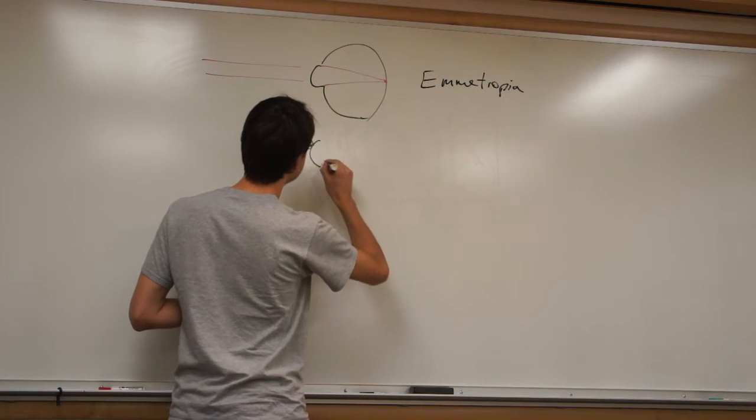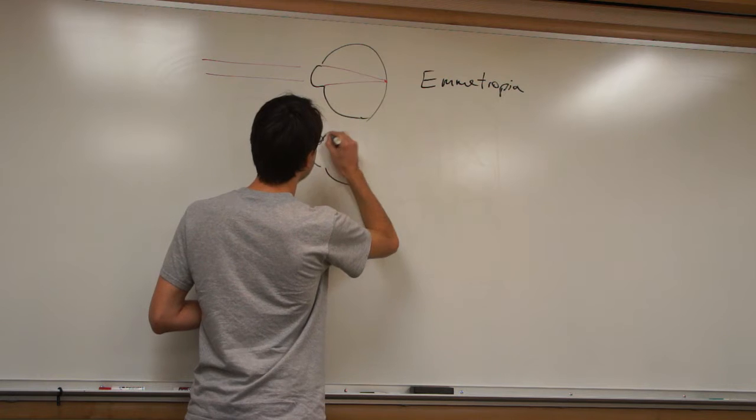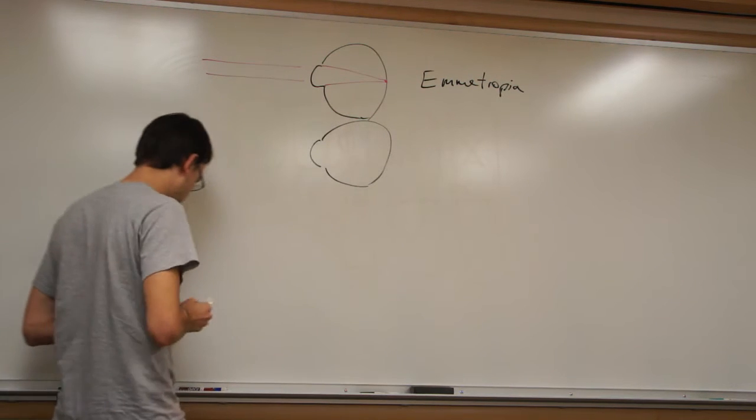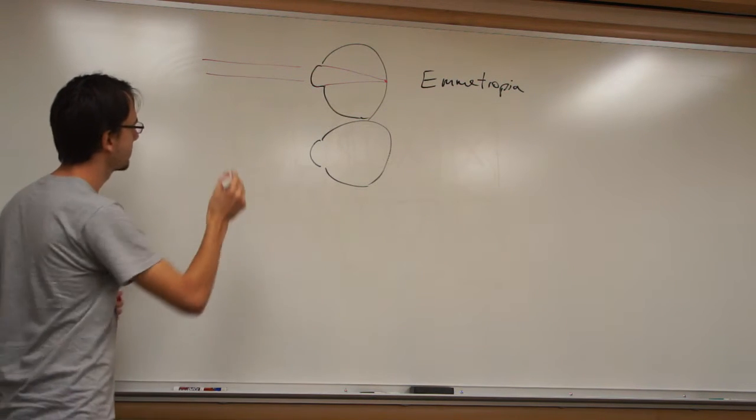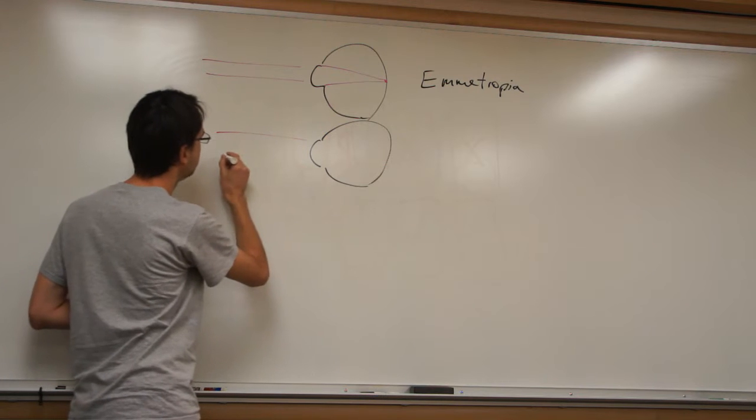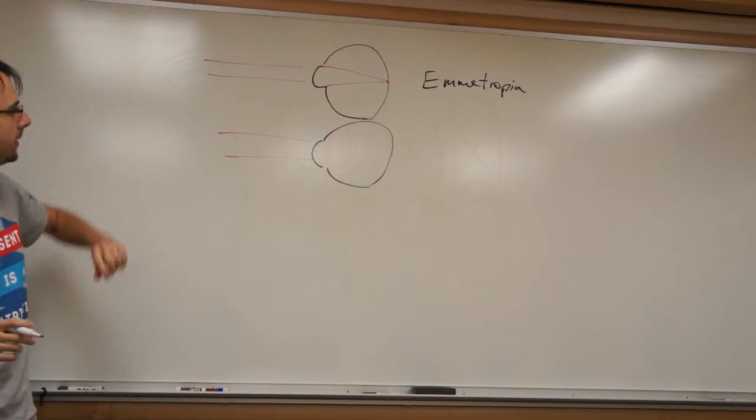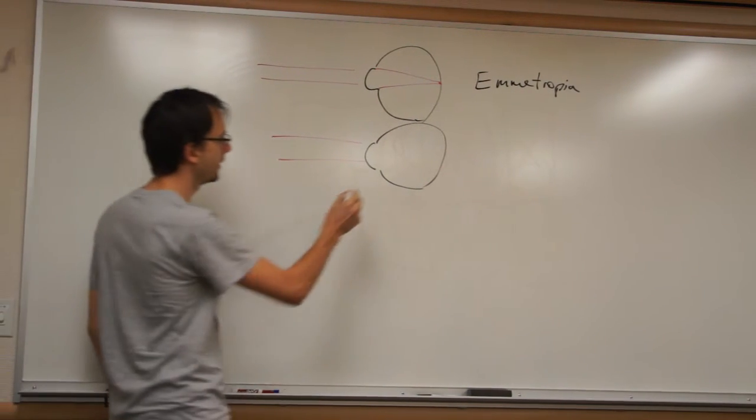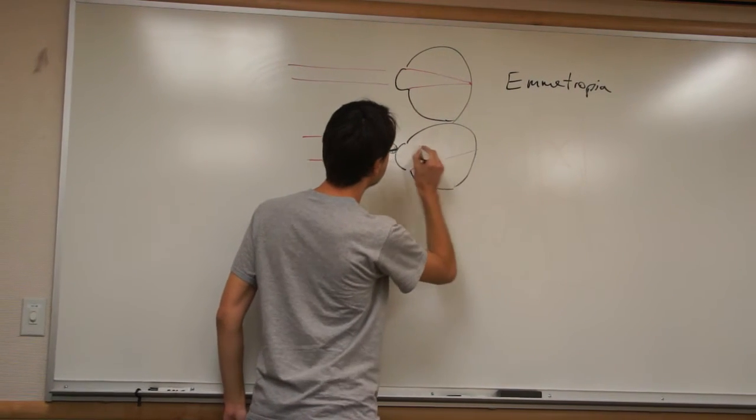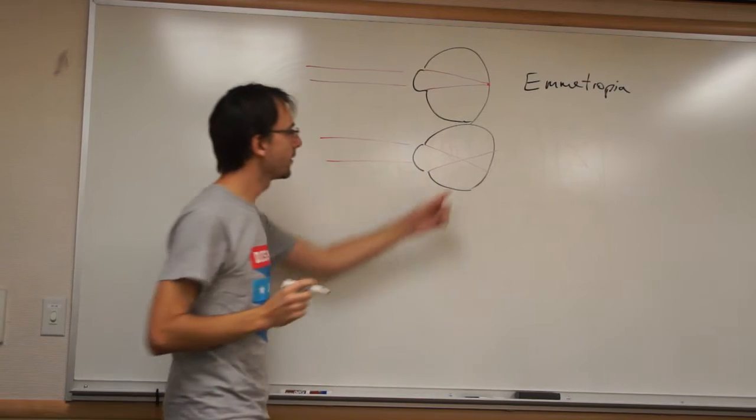Alright, so what happens very often is, I'm going to draw another eye here. We have the same set of parallel rays coming in, but now, the power of the cornea and the lens combined within the eye is so strong that everything's going to actually come to a focus before the retina.